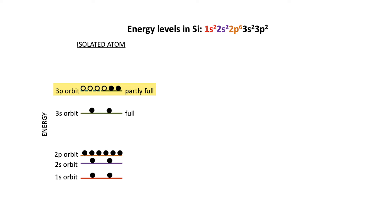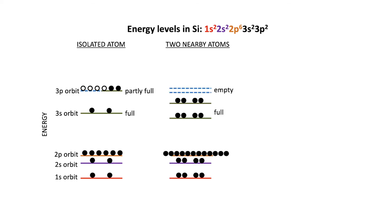The 3p orbit is not completely full — there's room for four more electrons. In total, silicon, which has atomic number 14 on the periodic table, has 14 electrons and four openings in its outermost orbit. Now let's consider the situation where we have, hypothetically, two atoms of silicon near one another. Obviously, the outermost orbits might change the most.